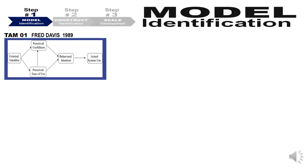A few examples on model identification. My favorite is the Technology Adoption Model (TAM), Fred Davis, 1989, where Davis talks about perceived usefulness and perceived ease of use as two constructs — two drivers which enable the behavioral intention of adopting technology, which eventually leads to the actual system usage of technology.